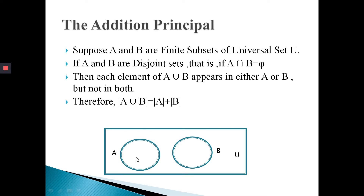If both circles A and B are disjoint — that is, if the intersection of A and B equals the empty set — then each element of A union B is either present in set A or in set B, but not in both. Therefore, the cardinality of A union B equals the cardinality of A plus the cardinality of B.